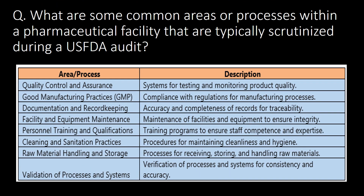What are common areas scrutinized during a USFDA audit? The 8 commonly scrutinized areas are: quality control and assurance, good manufacturing practices, documentation and record keeping, facility and equipment maintenance, personnel training and qualification, cleaning and sanitization practices, raw material handling and storage, and validation of processes and systems.